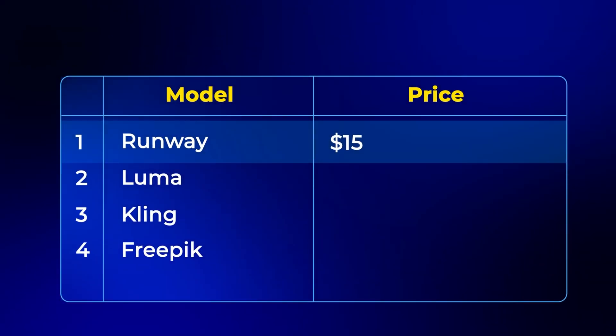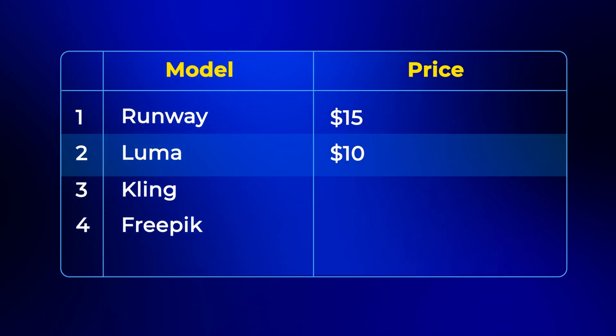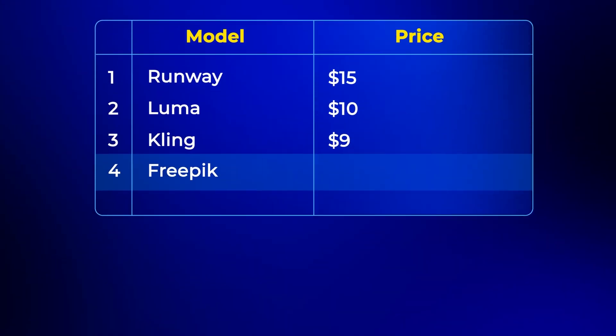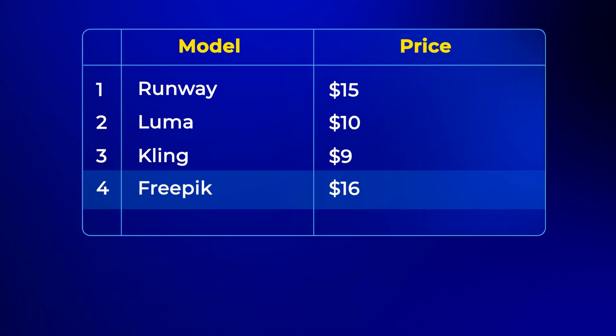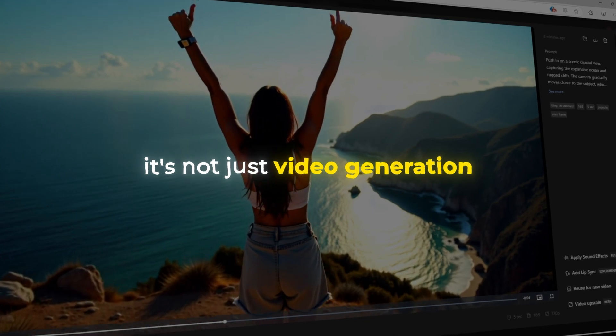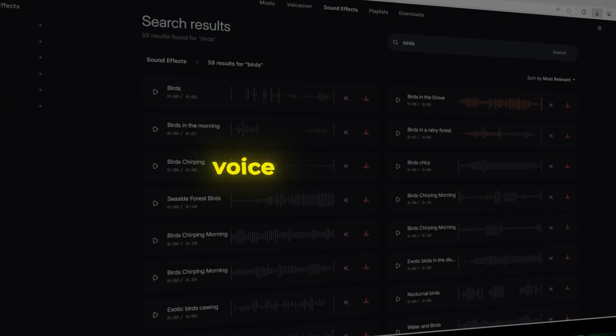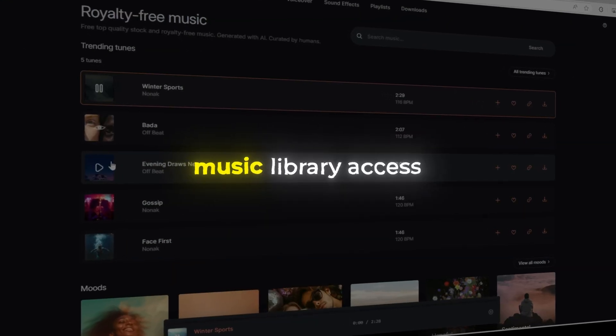Now let's talk about what makes Freepik absolutely insane, which is the price. While Runway costs around $15 a month for limited generations, Luma is about $10 a month and Kling starts at around $9 a month. Freepik gives you access to all these models for just $16 a month — that's potentially saving you over half every month if you were previously subscribed to multiple platforms. And it's not just video generation; your subscription also includes AI image generation, character training, voice generation, music library access, and much more.